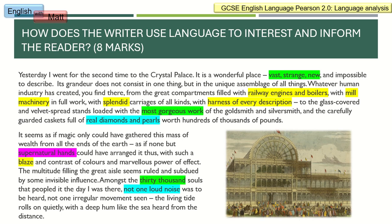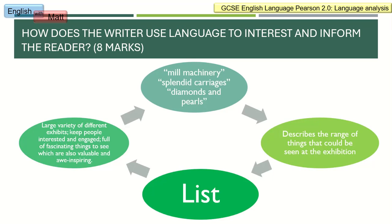The first example I'm going to talk about is a list — mill machinery, splendid carriages, diamonds and pearls. Brontë is literally just listing things that she can see. The effect is that she is effectively overwhelmed by the amount at this exhibition — a large variety of things to see, keeping people interested and engaged, fascinating, inspiring, and valuable. That is the effect; that is why she's listing. She has deliberately decided to use a list in her writing.